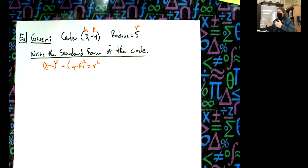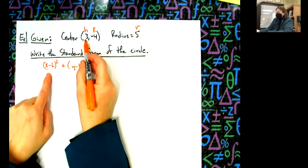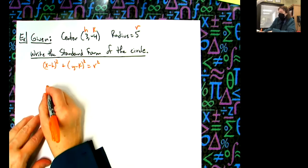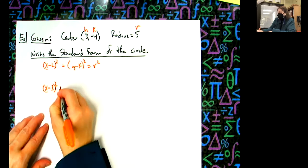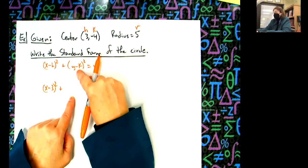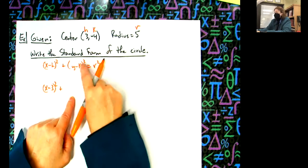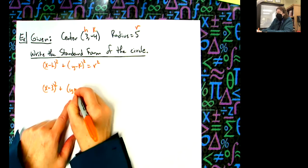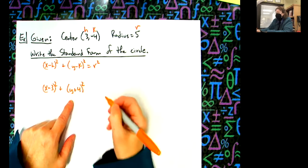When I do my h, it's a positive here so it'll be a negative here. So I'm going to go x minus 3. I'm going to take this number - it's a negative, so because my formula has a negative in it, I'm going to do the opposite. Minus a negative would make it a positive, so y plus 4 squared.